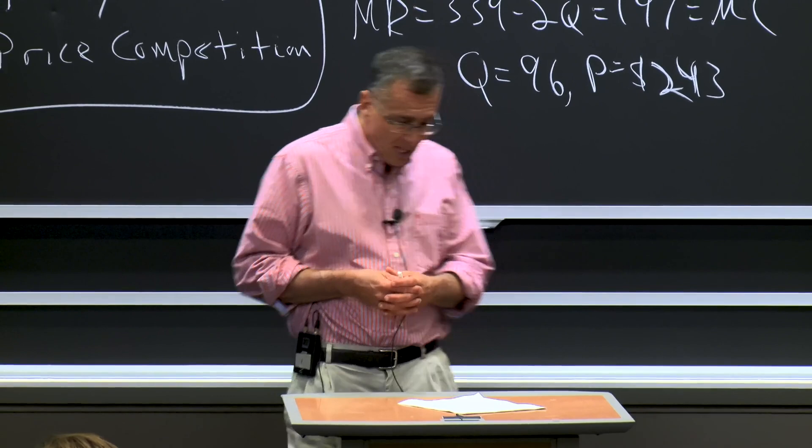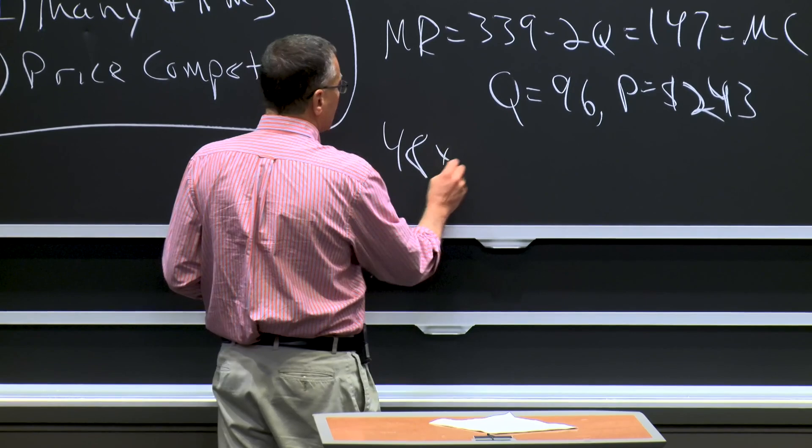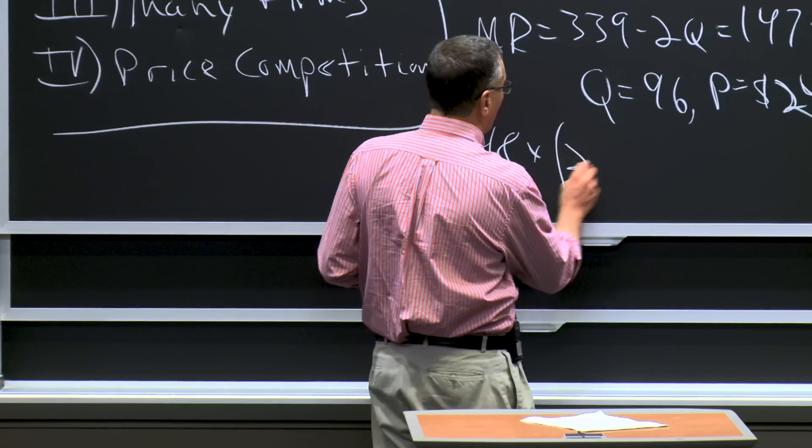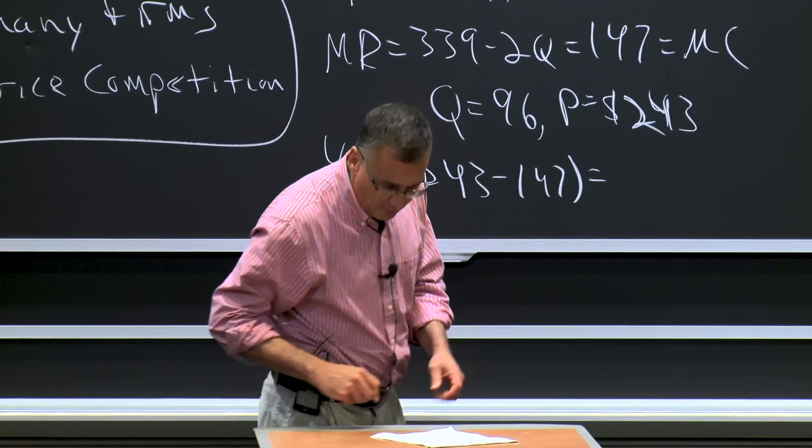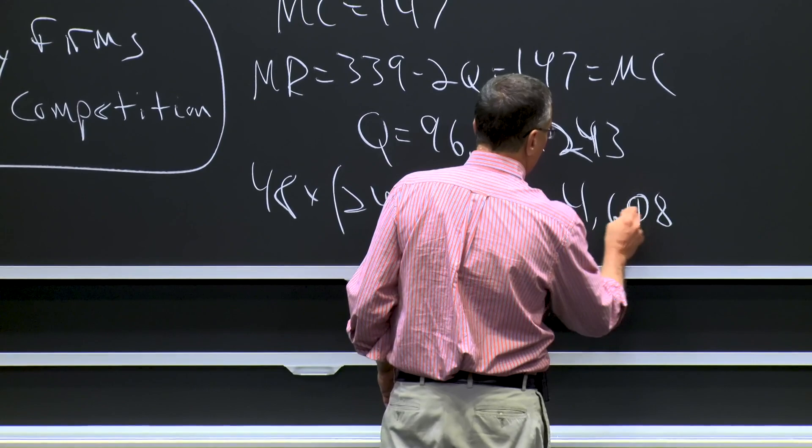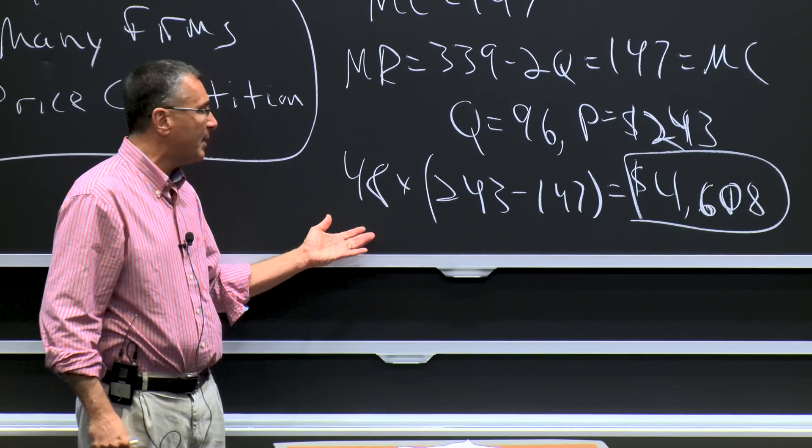Total profits: each firm would make profits of 48 times (price minus marginal cost), which equals 48 times (243 minus 147), or $4,608 per firm. So each firm takes the 96 flights, splits them in half, and each achieves profits of $4,608.